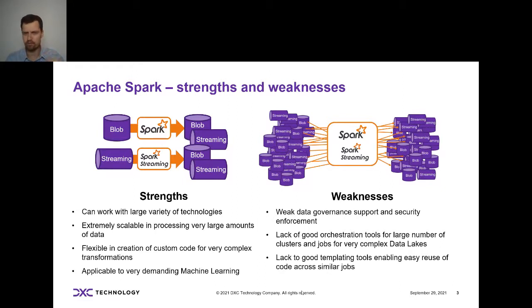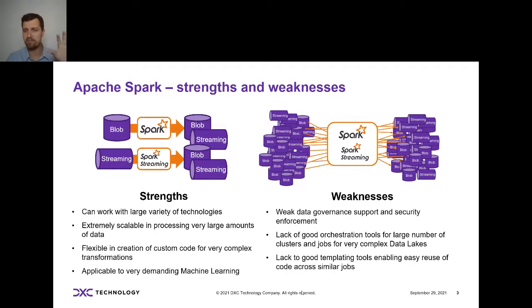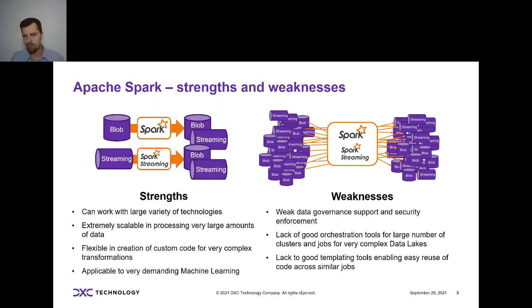Spark also has a lack of good templating tools to enable easy reuse of code. In an enterprise data lake or analytics platform, 99% of jobs will be very primitive — like insert-select or merge-select — just moving data from one place to another. That will be 95–99% of your jobs. Those really complex, heavy jobs are just a few, but you still have to manage those thousands of primitive ETLs, and they all need quality assurance, monitoring, and data reconciliation.